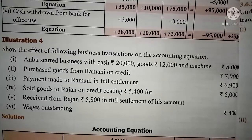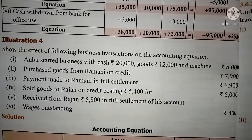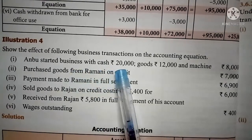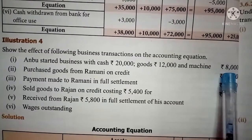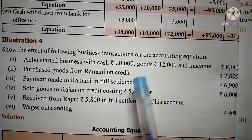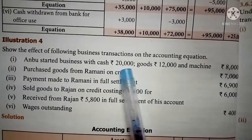In Illustration 4, we show the effect of following business transactions on the accounting equation. This type of sum will be asked in the public question paper, so you should read each and every transaction carefully. Here, Anbu started business with cash rupees 20,000, goods (stock) rupees 12,000, and machinery rupees 8,000. Since the proprietor starts the business by investing these three assets, we should open a cash column, a stock column, and a machinery column — three asset columns.